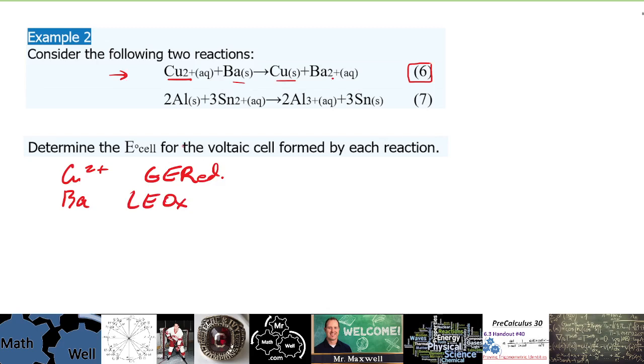So what we need to do to find the cell potential, the electric cell potential here, is to look at the chart and we look at the reduction and we look at the oxidation. Which one's being oxidized, which one's being reduced?